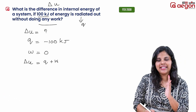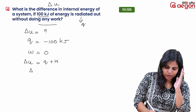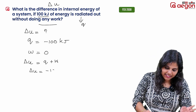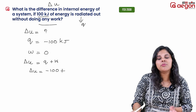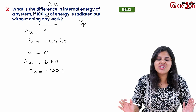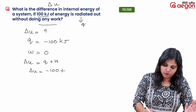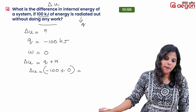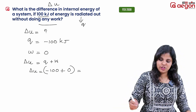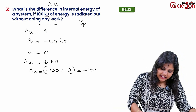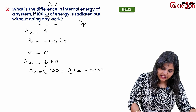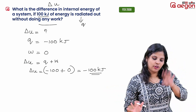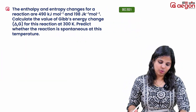Yes. Delta U — we calculate here. The value of Q is minus 100, and work is 0. So, delta U equals minus 100 plus 0, which is equal to minus 100 kJ. Clear? Okay. Set? Okay. There is no doubt.